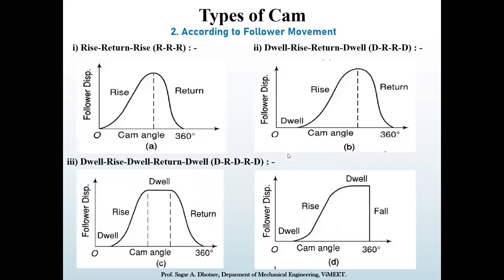According to the second classification — follower movement — there are three basic follower motions. First, rise-return-rise; second, dwell-rise-return-dwell; and third, dwell-rise-dwell-return-dwell. In the first type, there is an alternative rise and return of the follower with no period of dwells, and it is of very limited use in industry. The follower has a linear or angular displacement in this case.